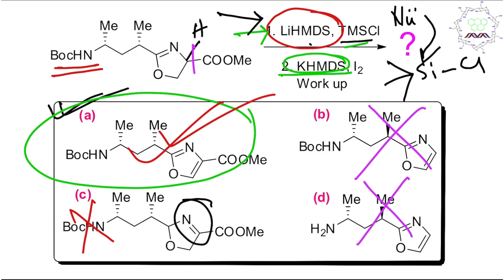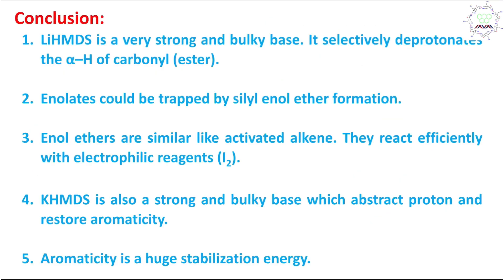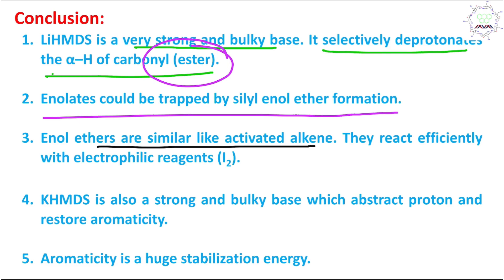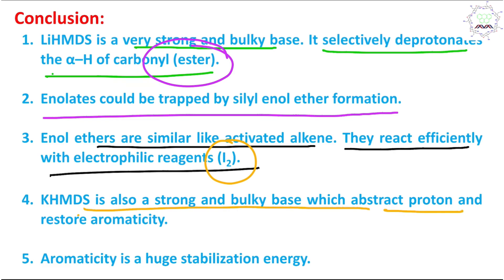In conclusion: lithium HMDS is a very strong, bulky, non-nucleophilic base that selectively deprotonates the alpha-hydrogen of a carbonyl — here an alpha-star carbonyl — and this enolate is trapped as a silyl enol ether. Enol ethers behave as activated alkenes and react efficiently with electrophiles like iodine. KHMDS is similarly strong and bulky (only the cation differs), and it abstracts the proton to eliminate H-I and restore aromaticity, which provides huge stabilization energy.